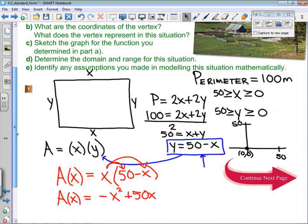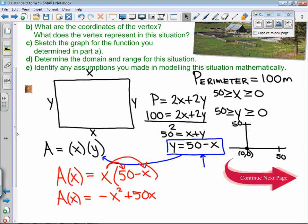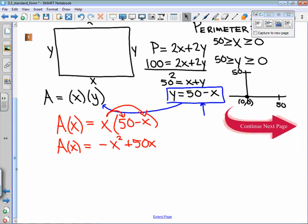All right, so B says, what are the coordinates of the vertex, and what does the vertex represent in this situation? Now, before we find the coordinates of the vertex, I want to do C. We're going to graph the function first. So in order to graph this function, we need our graphing calculator. We're going to go to that, and we need to type the function in for Y1.